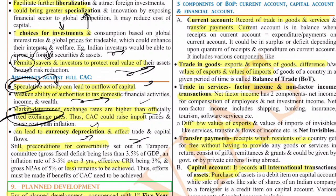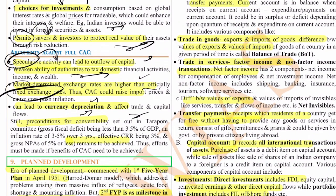Market-determined exchange rates are higher than officially fixed exchange rates, so capital account convertibility could raise import prices and push costs up, lead to currency depreciation, and affect trade and capital flows. The Tarapore Committee gave a roadmap with three important preconditions: first, the gross fiscal deficit should be less than 3.5% of GDP; second, the inflation rate should be around 3–5% for over three years; third, the Cash Reserve Ratio should be 3% and gross NPA should be less than 5%. These preconditions must be met before adopting full capital account convertibility, or else the economy will take a hit.